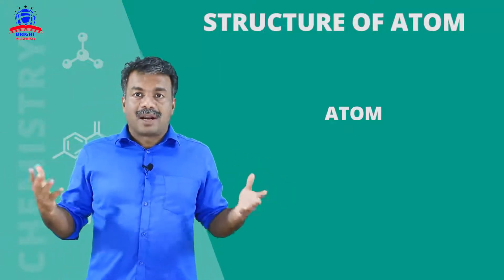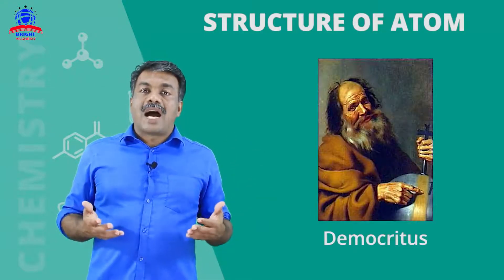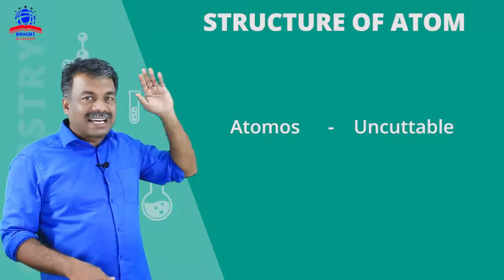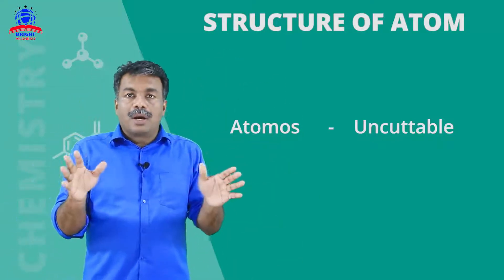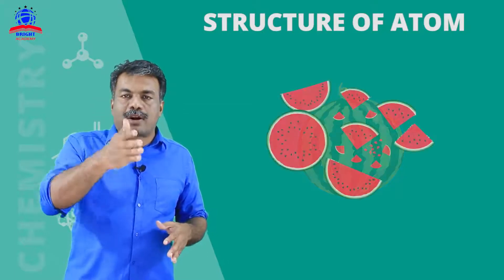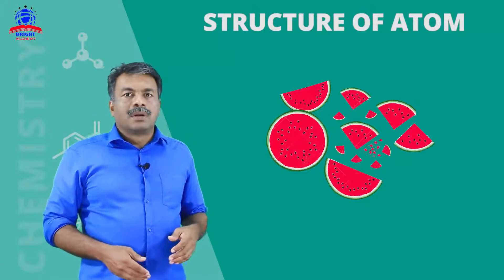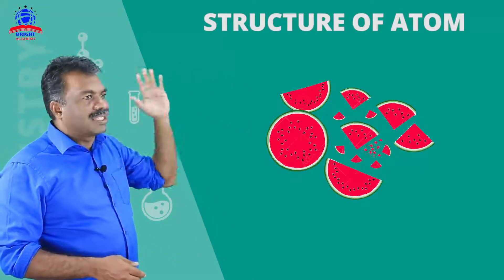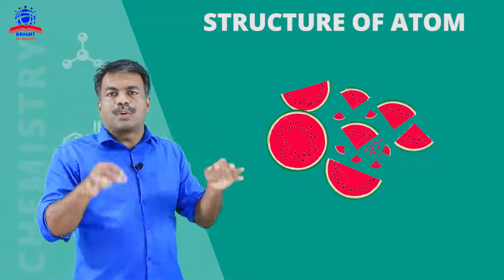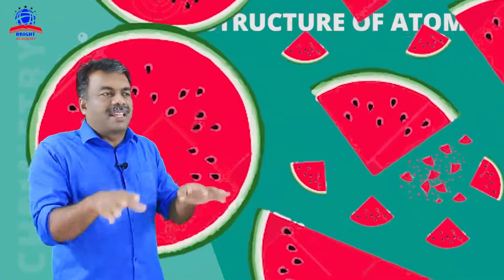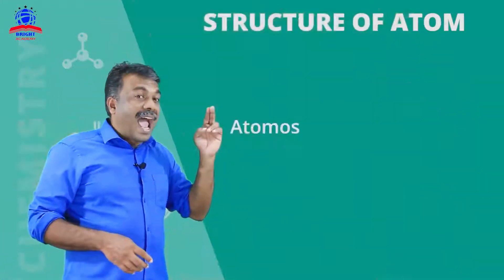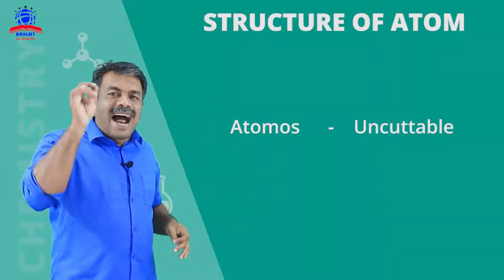What is an atom? The word comes from the Greek word 'atomos.' Atomos means uncuttable — in other words, the smallest particle of a substance that you can divide it into. When you take a particular substance and divide it down to the smallest possible particle, that is the atom. Atomos means uncuttable particles.